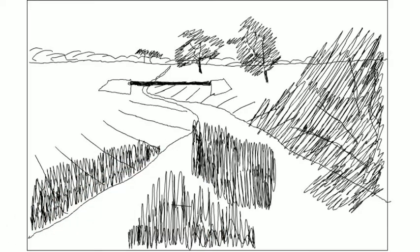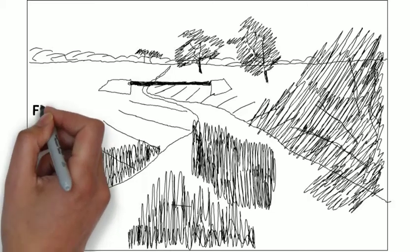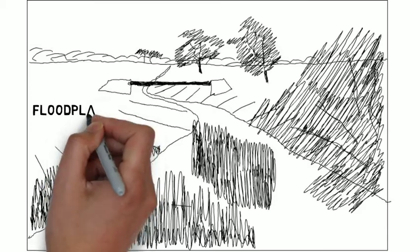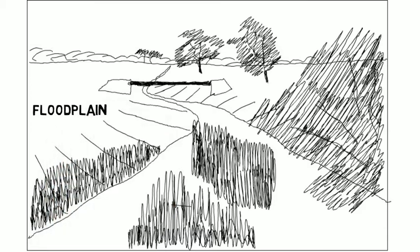Once you've finished creating the actual sketch itself, then it's useful to label some of the main features that you actually see in front of you. In this case, the floodplain, the river channel.